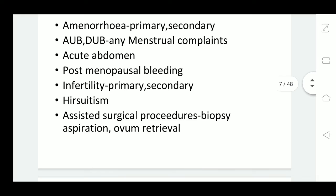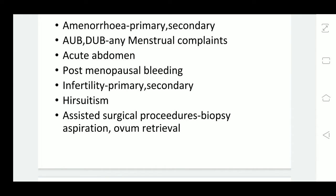A patient may also come with acute abdomen. In acute abdomen, we would like to differentiate or diagnose whether she is suffering from ectopic pregnancy, or it could be a twisted ovarian cyst — these are common causes of acute abdomen in gynecology — or there may be a non-gynec cause which we have to rule out, such as appendicitis or intestinal perforation.